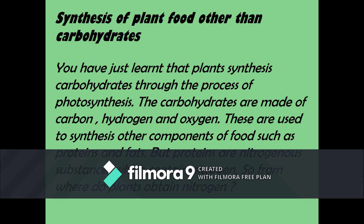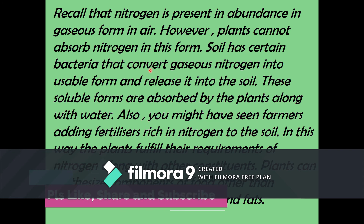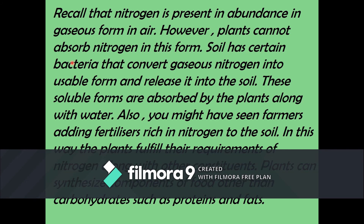From where do plants obtain nitrogen? Nitrogen is present in abundance in gaseous form in the atmosphere — 78% of the atmosphere is nitrogen. However, plants cannot absorb nitrogen in this gaseous form. Soil has certain bacteria called rhizobium bacteria, which have the ability to take atmospheric nitrogen and convert it into a soluble form. These rhizobium bacteria live in the roots of leguminous plants, such as grams, peas, and beans.